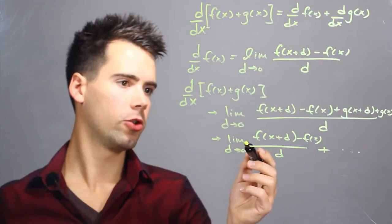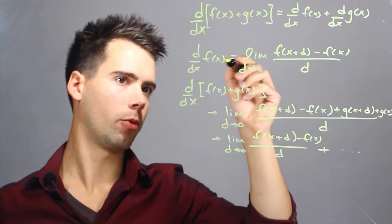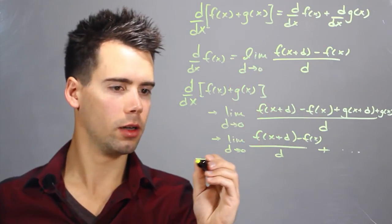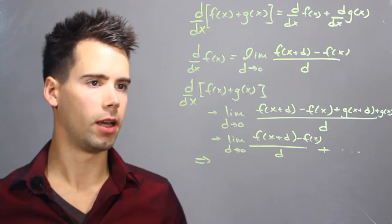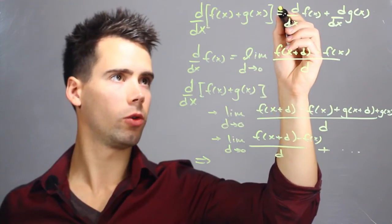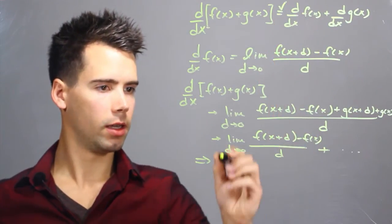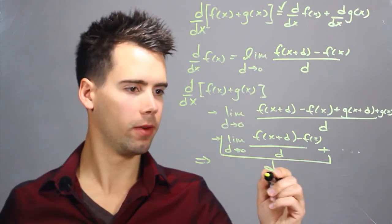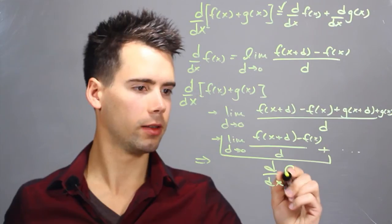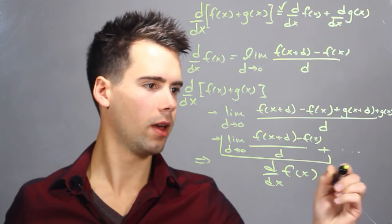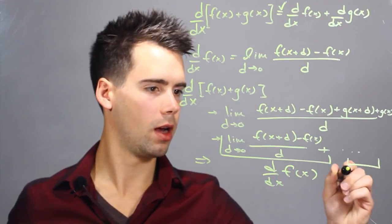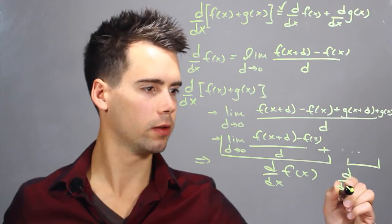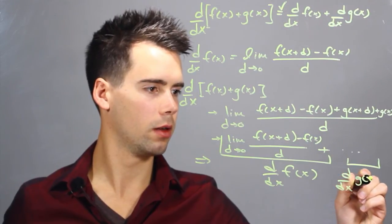Now going back to our original definition of a limit we see that it's actually equal to separate derivatives. So this can be concluded by saying that the sum rule is true because each term is a separate term which is a derivative with respect to x of f of x and the derivative with respect to x of g of x.